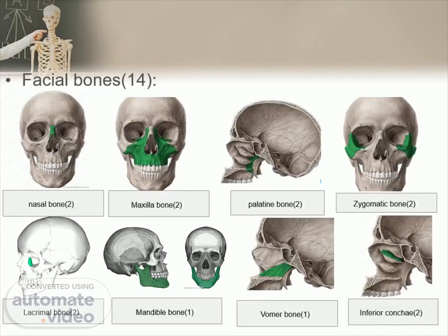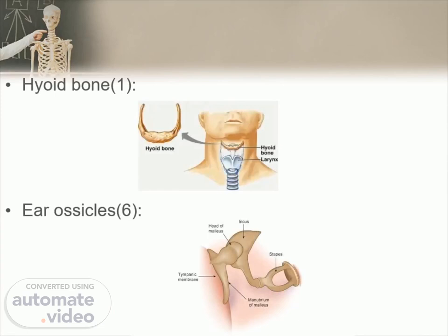The names of the fourteen facial bones are: inferior nasal concha (two), lacrimal bones (two), mandible, maxilla (two), nasal bones (two), palatine bones (two), vomer, and zygomatic bones or zygoma (two). The hyoid bone is a U-shaped bone in the neck that supports the tongue. The middle ear consists of the tympanic membrane and bony ossicles called the malleus, incus, and stapes, which connect the tympanic membrane to the inner ear, allowing transmission of sound waves.